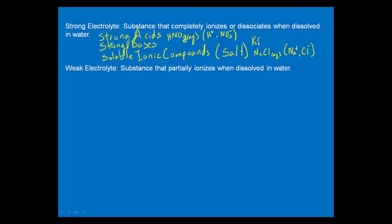The same is true for bases. If you see potassium hydroxide, you don't think of potassium hydroxide as a compound floating around in solution. You think of potassium and hydroxide as distinct, separate ions in solution. For strong electrolytes, we think in terms of ions in solution.